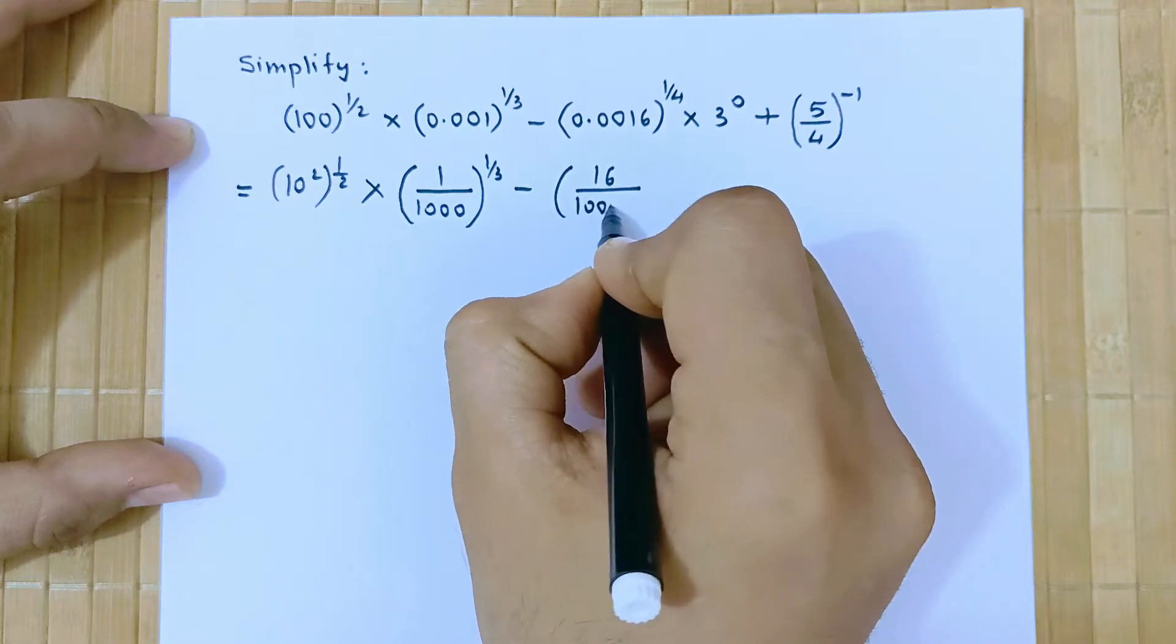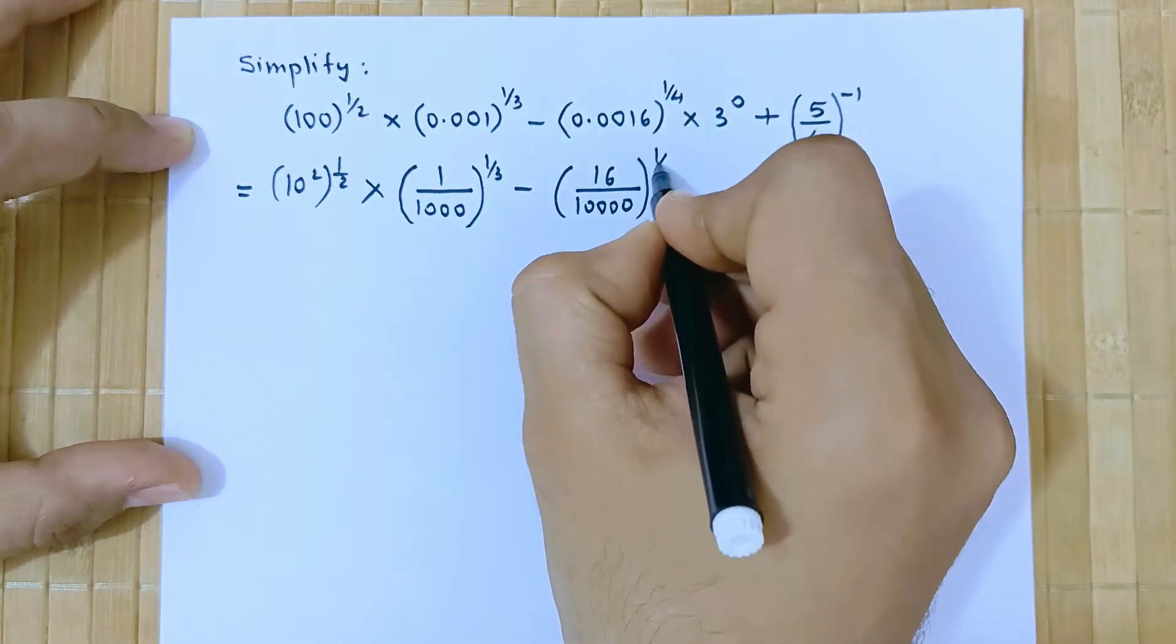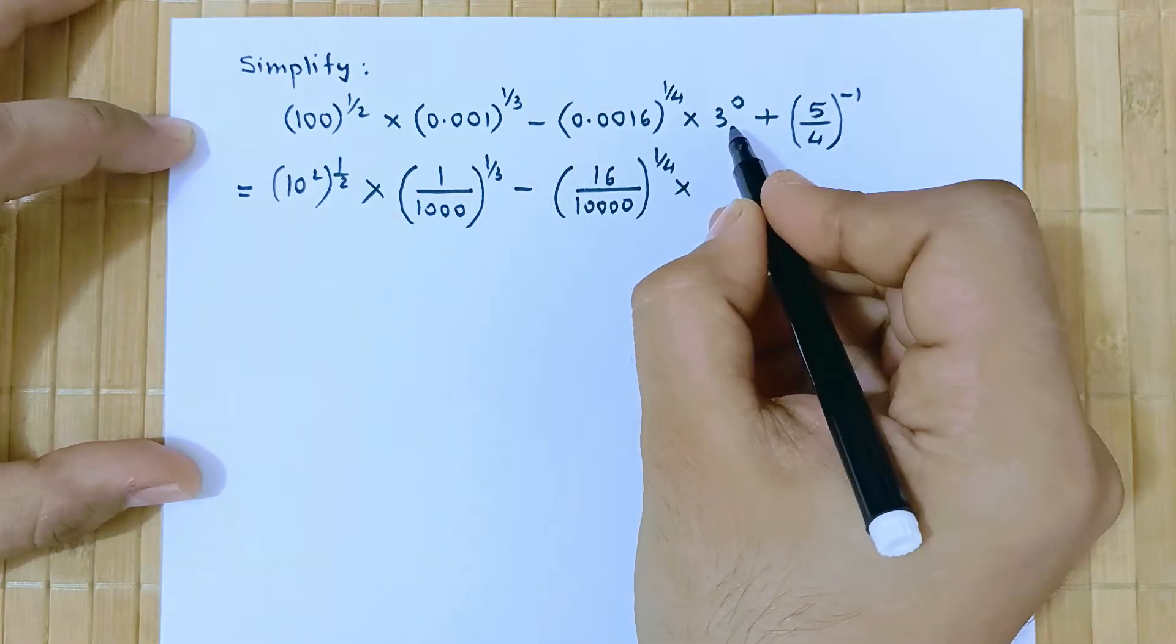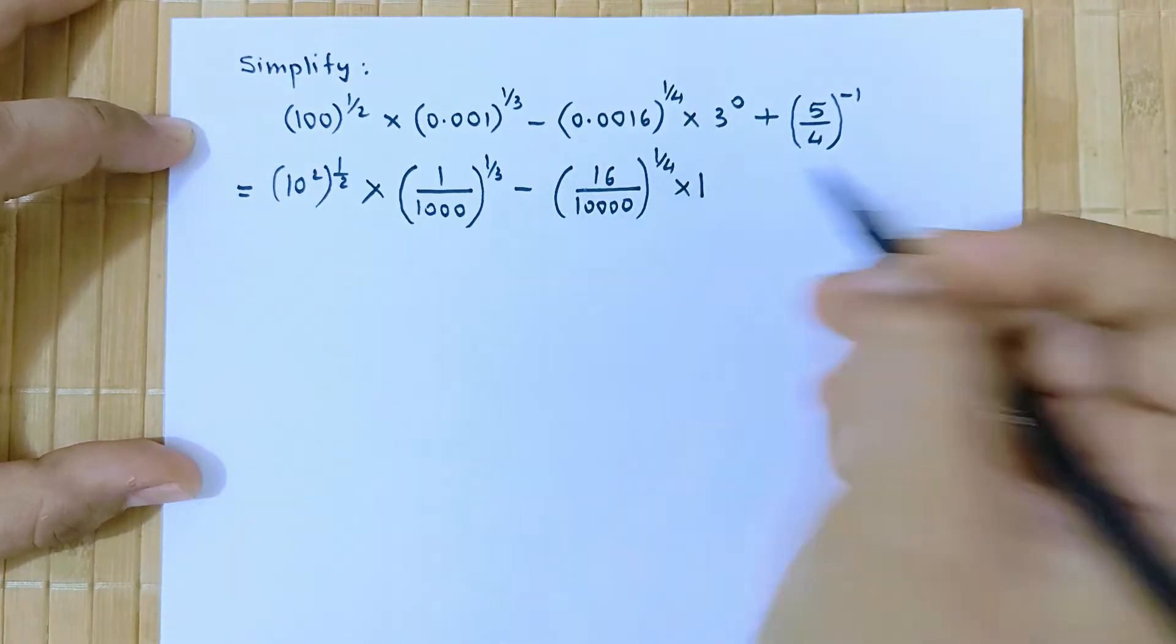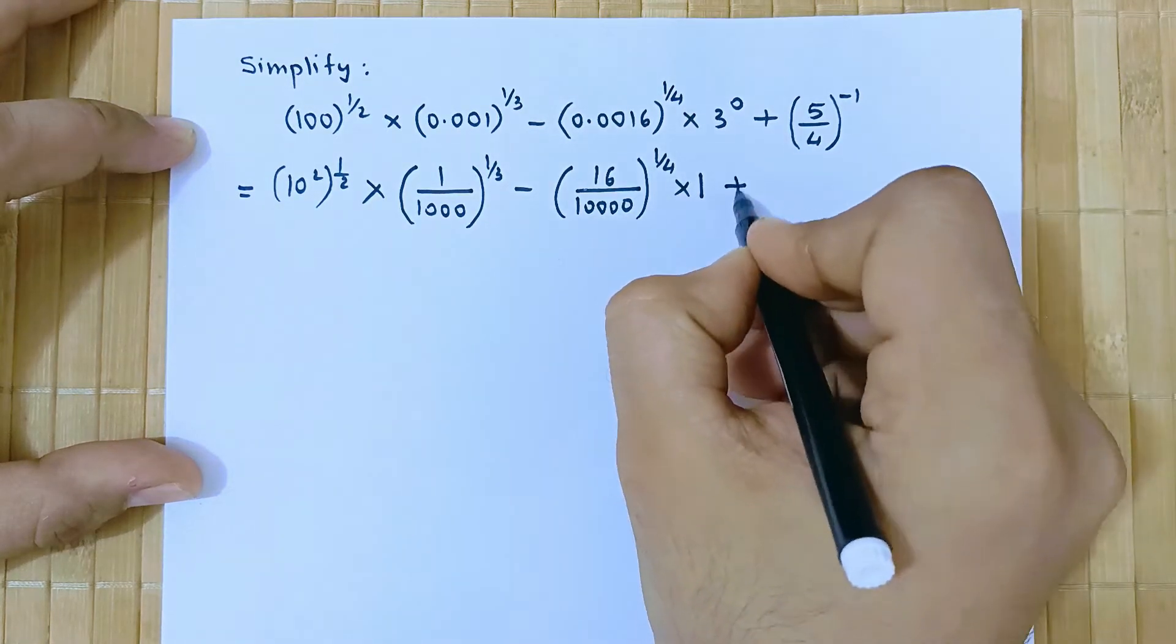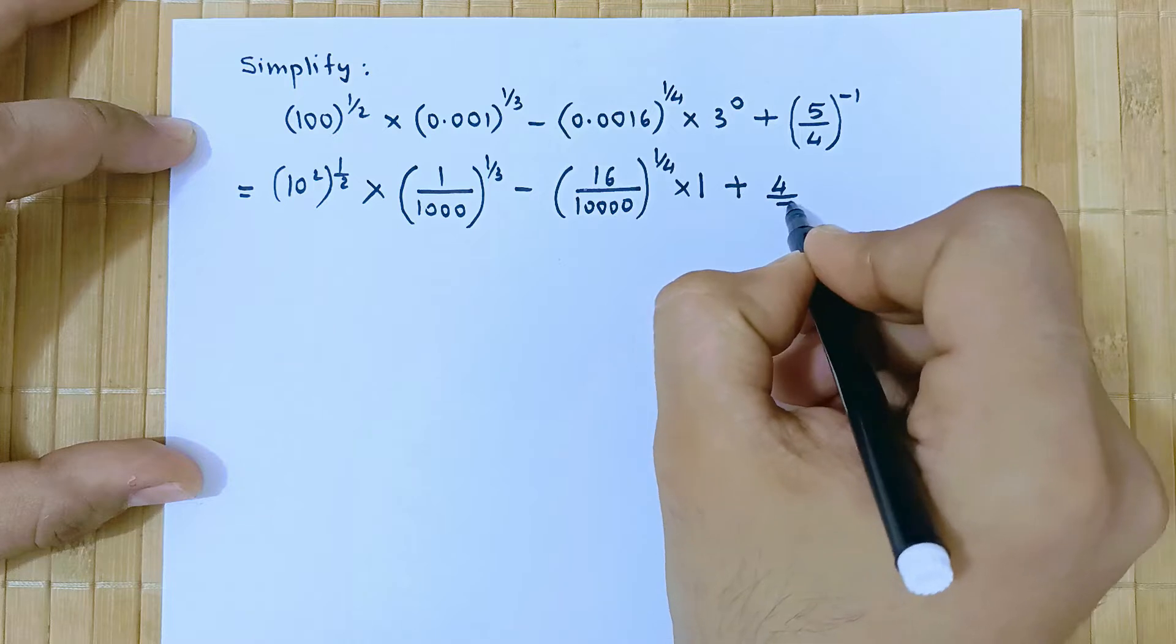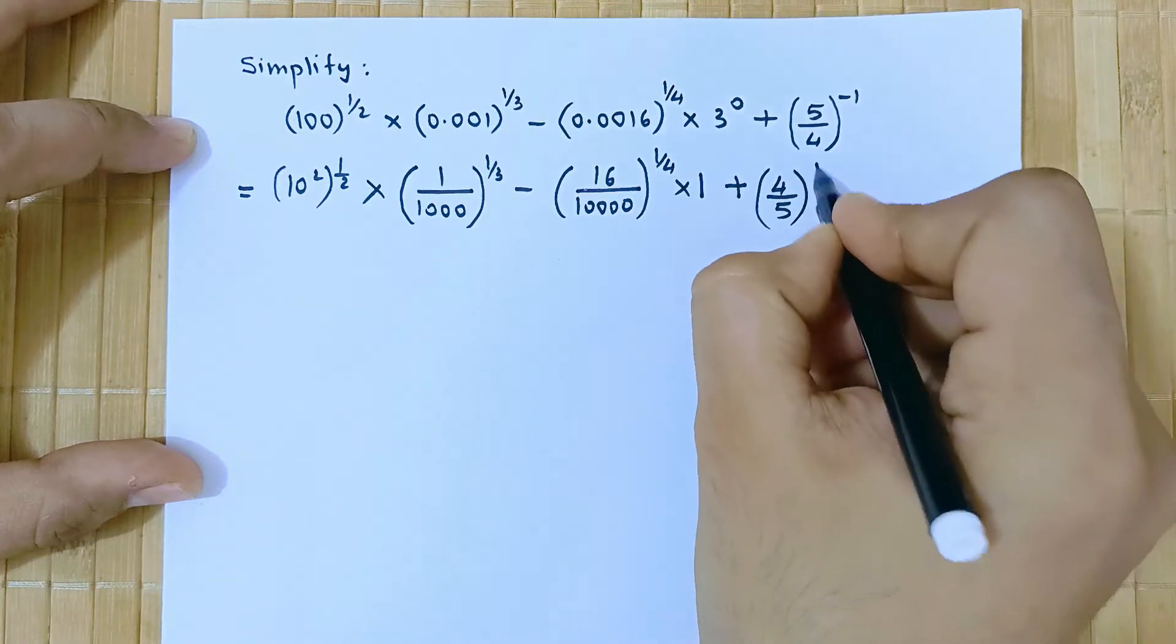So 16 upon 10,000 raised to 1 by 4 into 3 raised to 0 is of the form A raised to 0. So this value is 1 plus and if we do reciprocal this term then it will be 4 by 5 raised to 1.